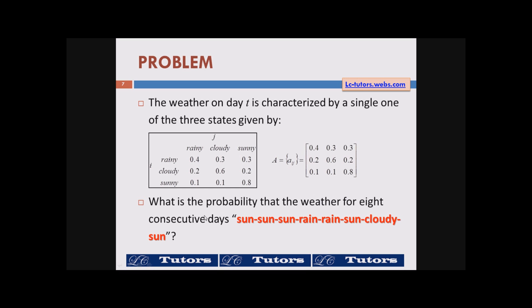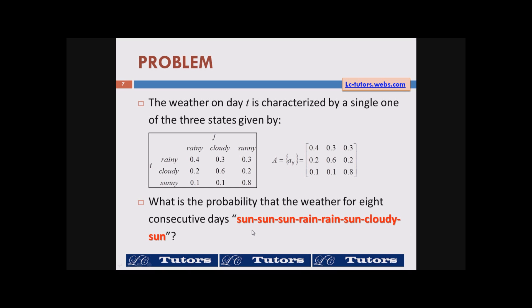Now the question here is what is the probability that the weather for eight consecutive days sunny sunny sunny rain rain sunny cloudy sunny. So if the state sequence is given we need to find out what is the probability of having such a state sequence. Let's see how are we going to attack this problem. So what is given here is the observation sequence which is sunny sunny sunny rain rain sunny cloudy and sunny. So sunny state is state number three. Rainy state is state number one. Cloudy state is state number two. So basically we have this observation sequence of the states.